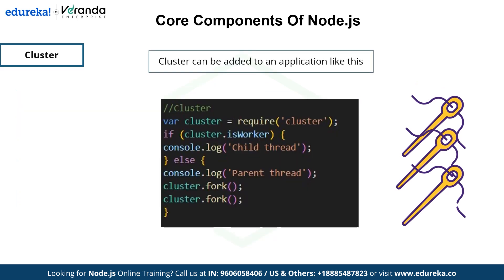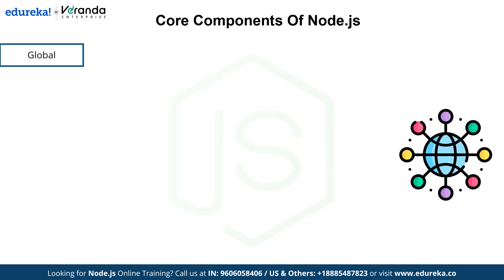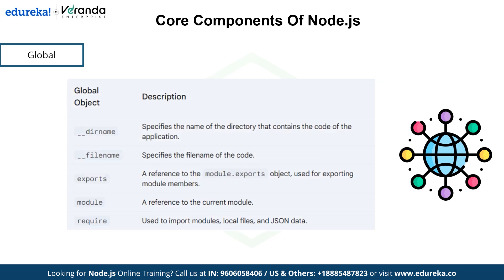Here is some code to add the cluster to your web application. The next component is global objects. The global object in Node.js serves as a global namespace, allowing you to access variables and functions throughout the application without needing to import them explicitly. Global objects include __dirname, which specifies the name of the directory containing the application code, __filename which specifies the file name, and also exports, module, and require.